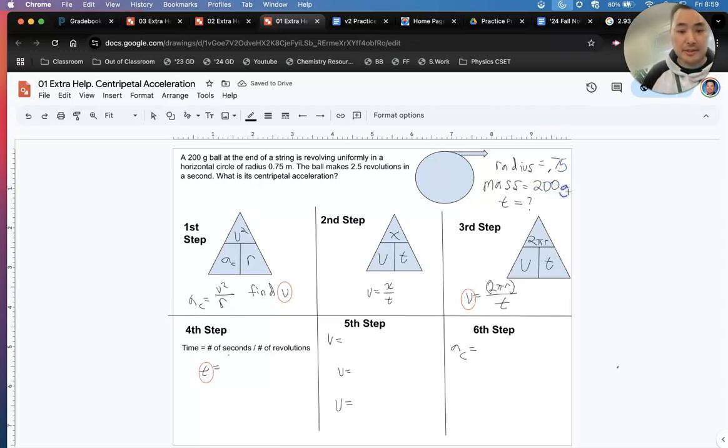And then, Caleb, what's the time? It's 2.5 revolutions in a second. But we don't know time. But we can use revolutions to find time. So if we all look at the first step, it gives us a triangle. Acceleration equals velocity squared over radius. But we don't have velocity yet. We have to find velocity. So we use the second step. Velocity is x over t. But we don't have t. So what we're going to do is we're going to find t here.